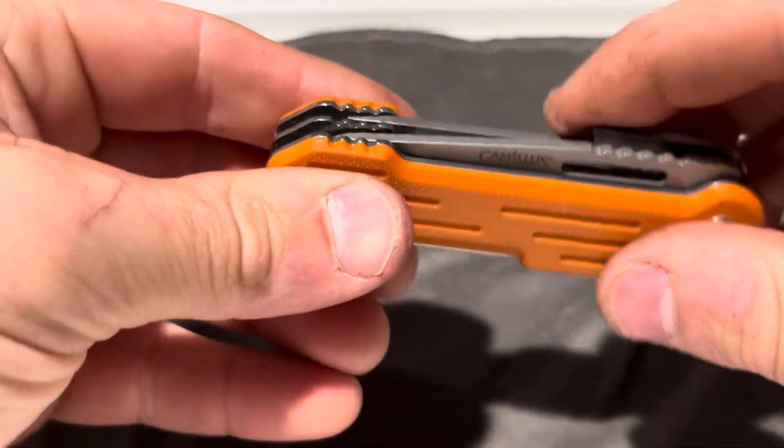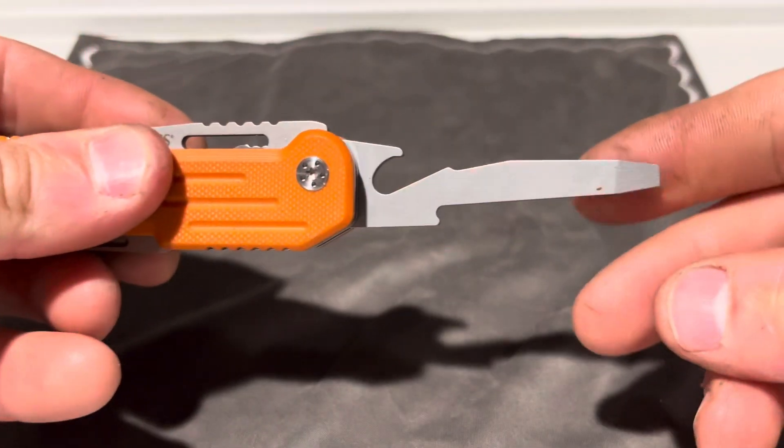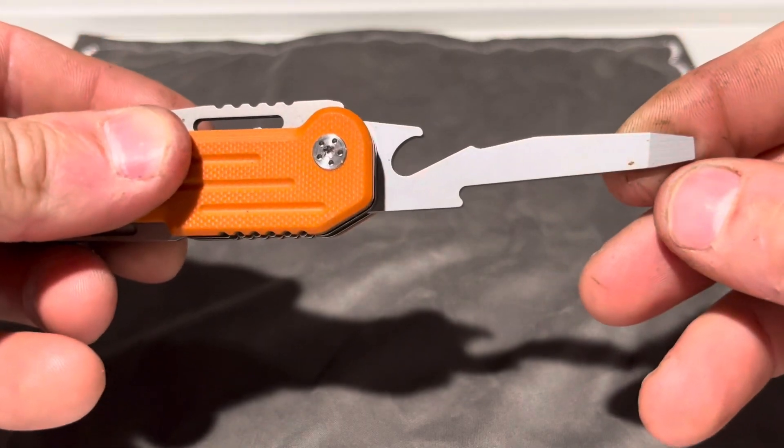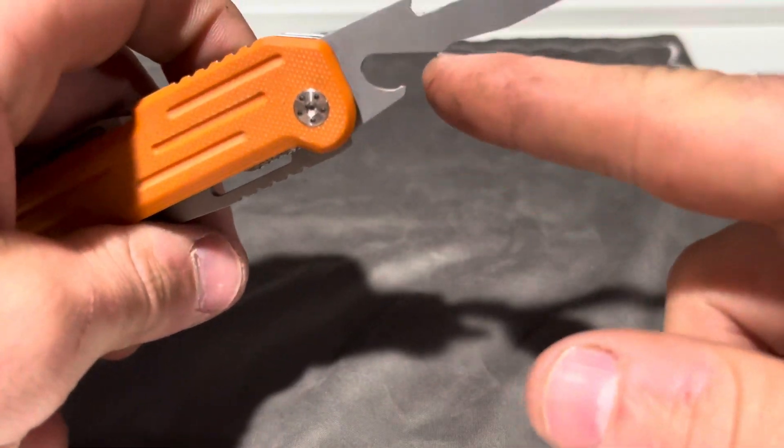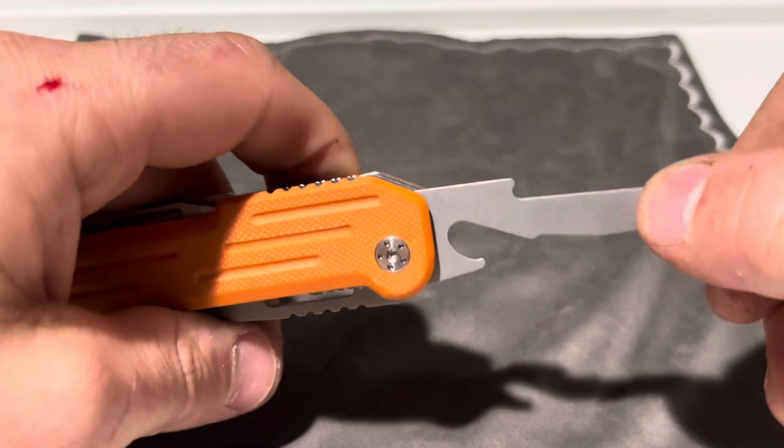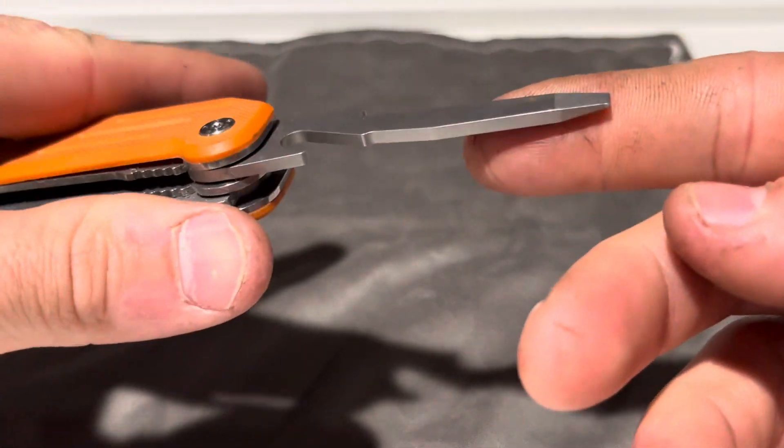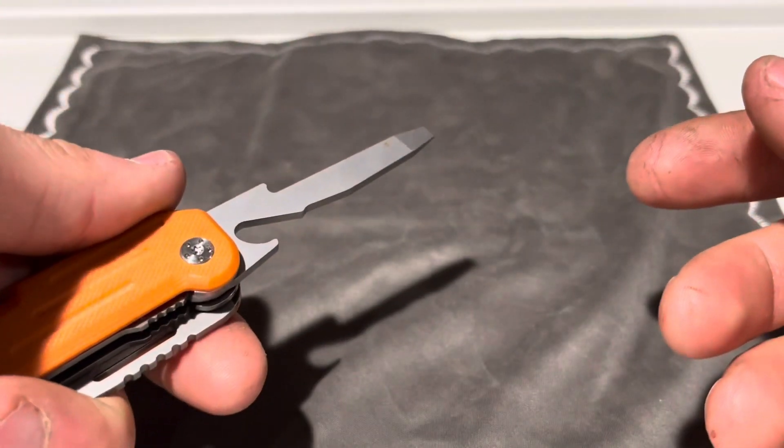And then on this side you get a real long flat head screwdriver. At the very beginning here you get the bottle opener, and that's a nice long screwdriver.